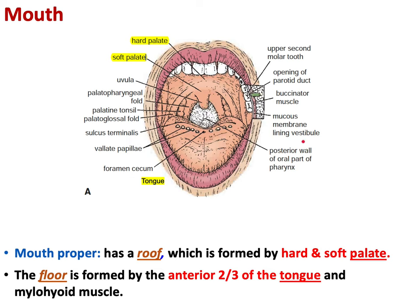Now shifting to the oral cavity proper. Looking at the mouth, you notice it has a roof and a floor. The roof is composed of two parts: one hard anteriorly — the hard palate — and one soft posteriorly — the soft palate. The soft palate has a projection called the uvula.